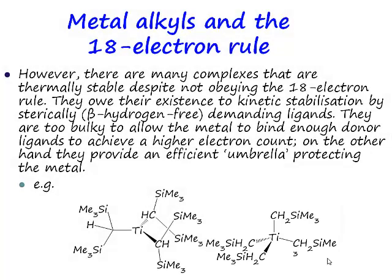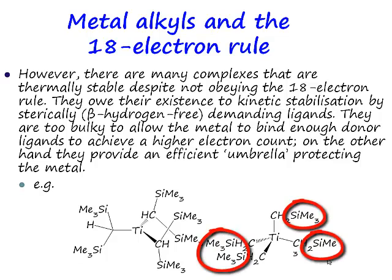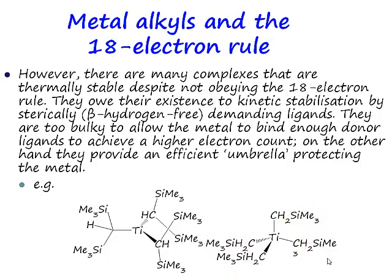What does eight electrons say to you? Eight electrons should say to you: this is a spectacularly electron-deficient compound — I bet that's really reactive. It is really reactive, but the reason it's stable at all is because these really bulky trimethylsilyl groups produce an umbrella of steric protection for the metal centre. If this was just a methyl group it wouldn't be stable, but with a trimethylsilylmethyl group it is just about stable. It's very reactive, but we can isolate it and do chemistry with it.